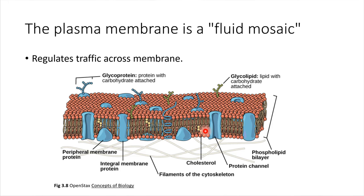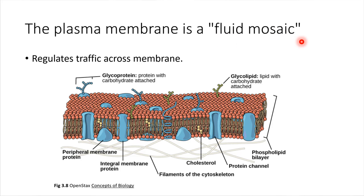There are all different sorts of proteins — we're not going to get into all the details about them. What's important to know is that the plasma membrane helps to regulate which sorts of things can cross. We say that the plasma membrane is a fluid mosaic, and the reason it's called a fluid mosaic is because these molecules — the phospholipids — are free to slide past each other.